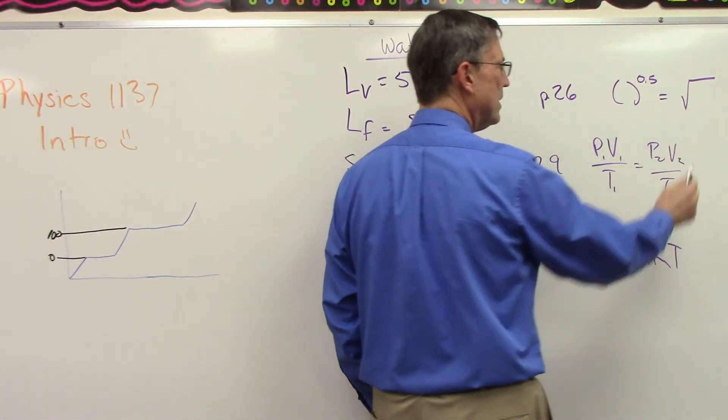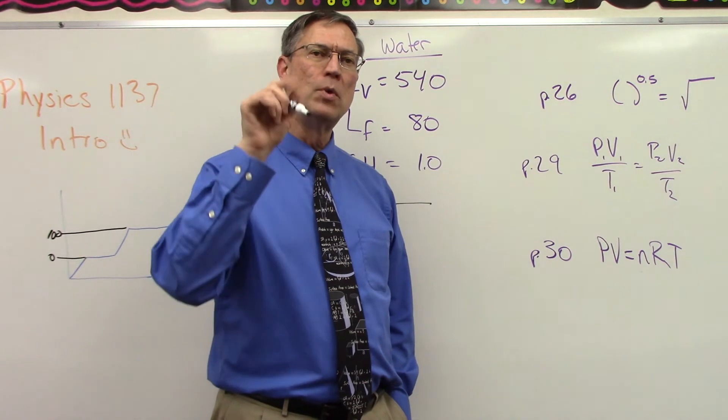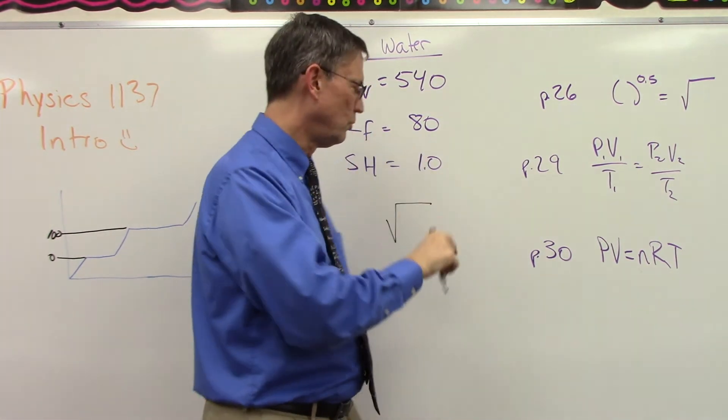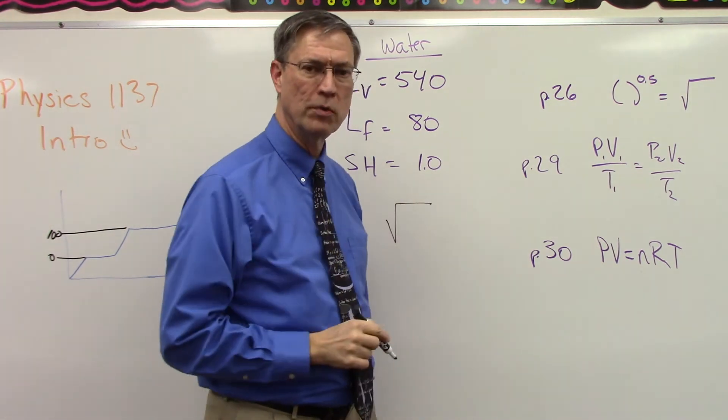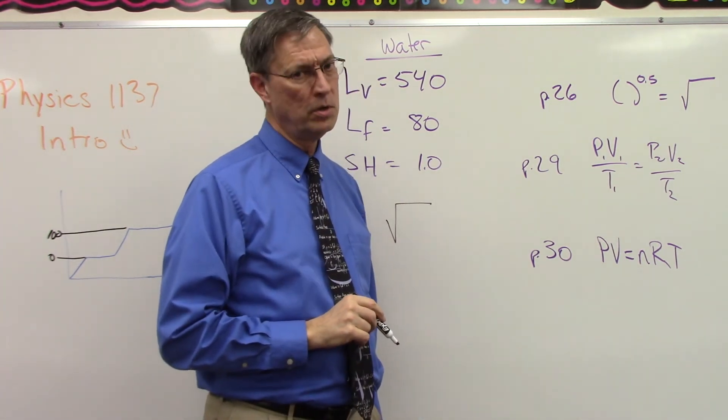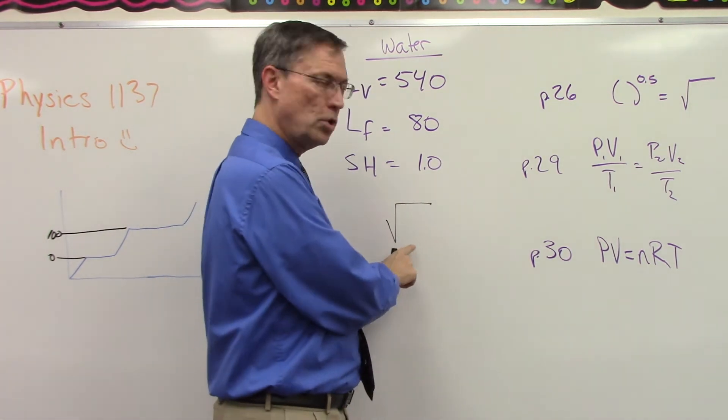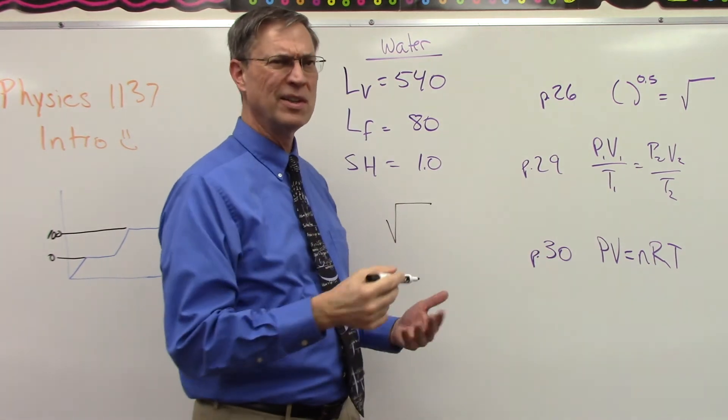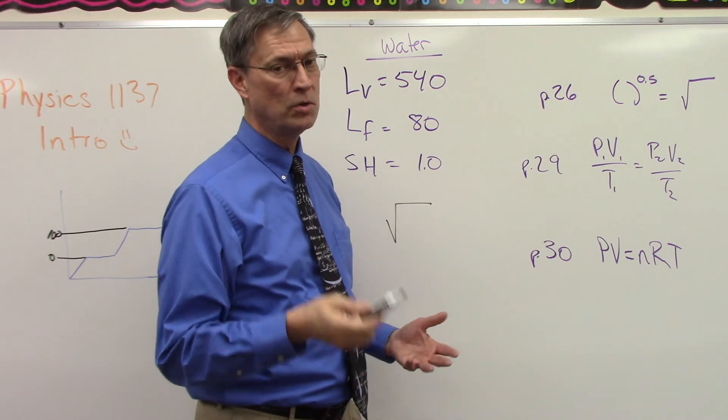So if I were you, wherever you see the 0.5, I would just take your pencil right now and just write the square root symbol over it. Because on your calculator it's going to be a lot easier to solve the problem using the square root key than trying to figure out a 0.5 exponent. All right, so that's a tip from Mr. Anger.